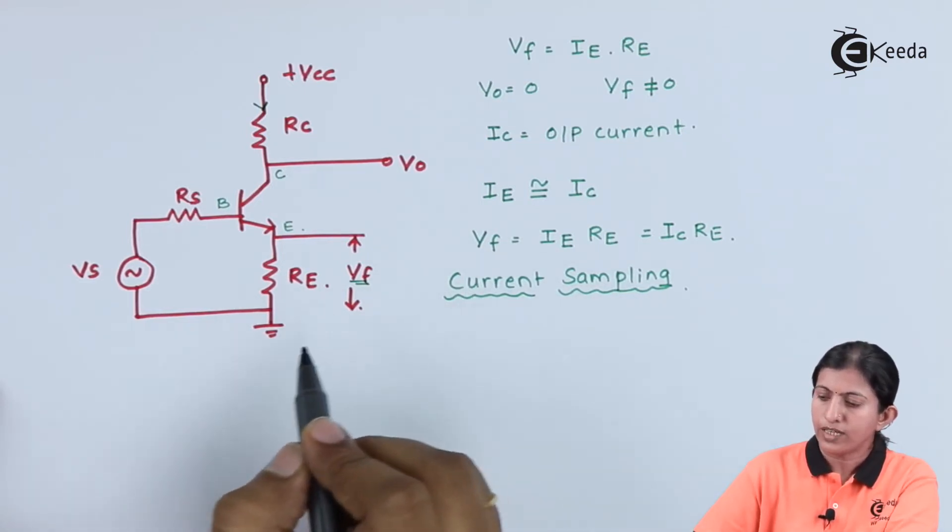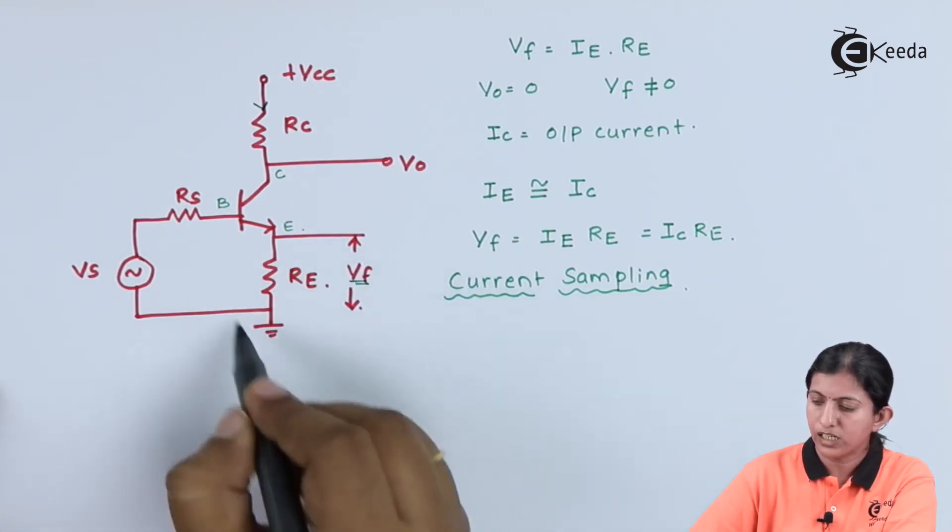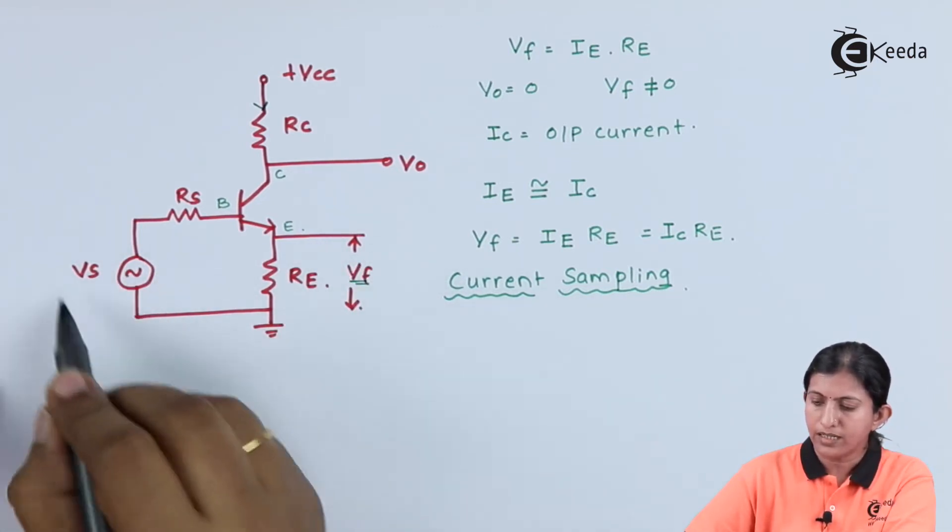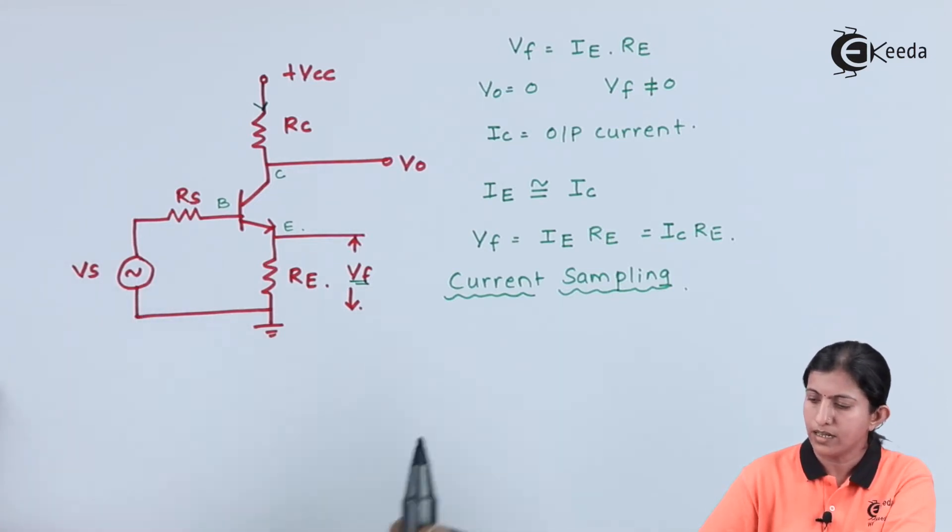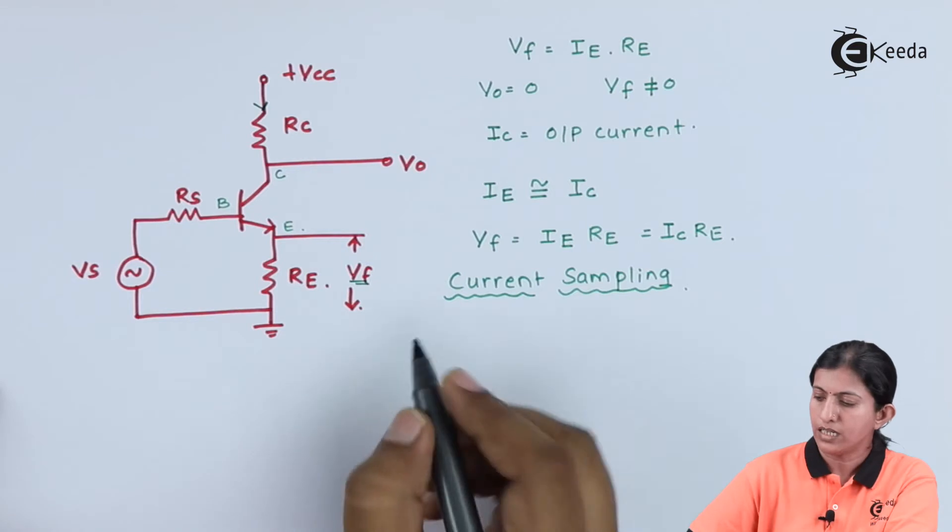Then, if we see the input side, this feedback voltage is applied in series opposition with the supply voltage. And hence, this mixing is series mixing.